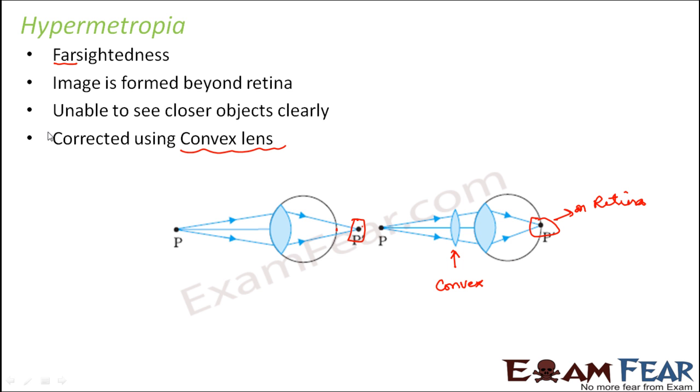It can be corrected using a convex lens. Myopia and hypermetropia are two very common defects of vision which are seen in people. It is not necessary that it is seen only in elderly people. Even young people can get these problems. In fact, some people from their childhood have these kind of defects of vision.